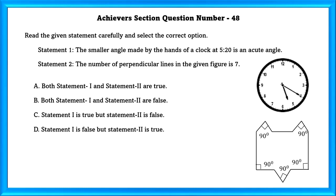Now, let us check statement 2. As we can see here, there are only 5 perpendicular lines in the given figure. So, the answer is C. Statement 1 is true, but statement 2 is false.